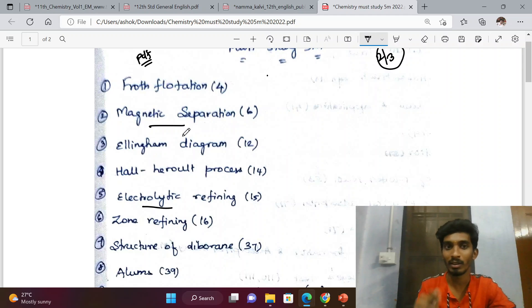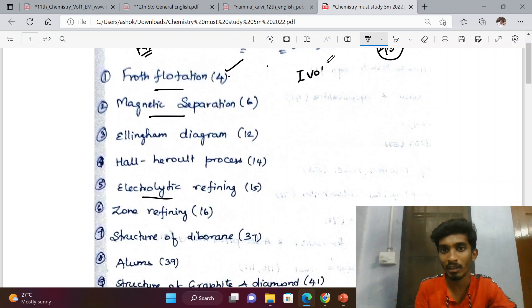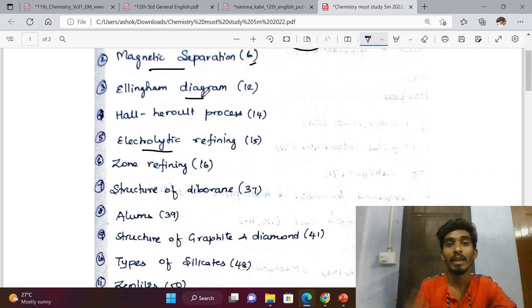Just for a glance, froth flotation is page number 4 in the first volume. Next, magnetic separation page number 6, Ellingham diagram - observations, application, limitation - and Hall-Heroult process.